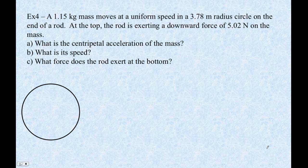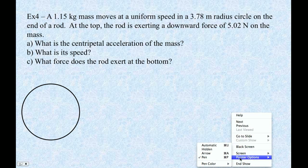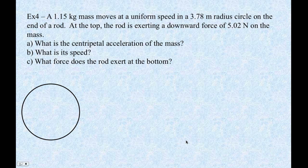Here's a final example for motion in a vertical circle. For this one, instead of me telling you what the centripetal acceleration is, I'm actually telling you that there's a force acting on this thing. It's a downward force at the top. We don't know the velocity, but I bet we can figure it out. These questions kind of lead us in the direction we want to go.